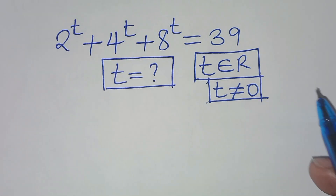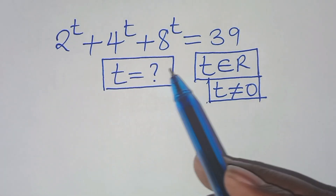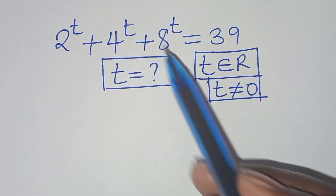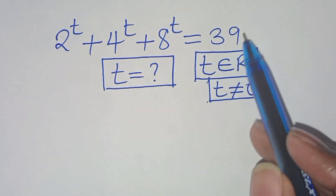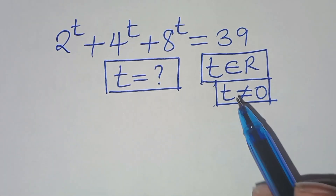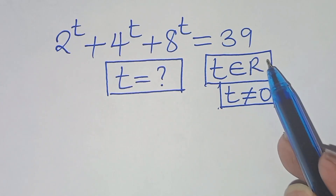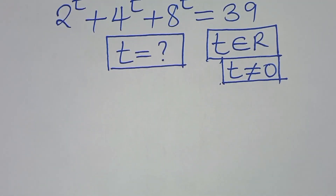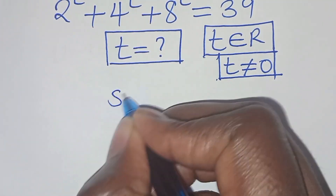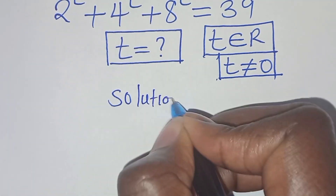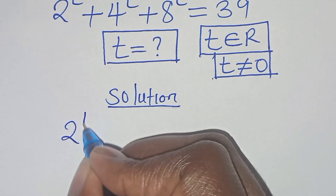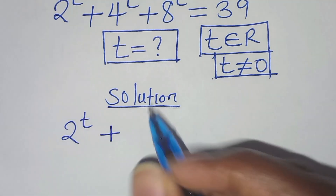Hello everyone, you're welcome to solve this nice algebra problem which is 2 to the power of t plus 4 to the power of t plus 8 to the power of t, this is equal to 39. So what is the value of t, given that t is a member of real numbers and that t is not equal to 0? Let's present a solution from here.